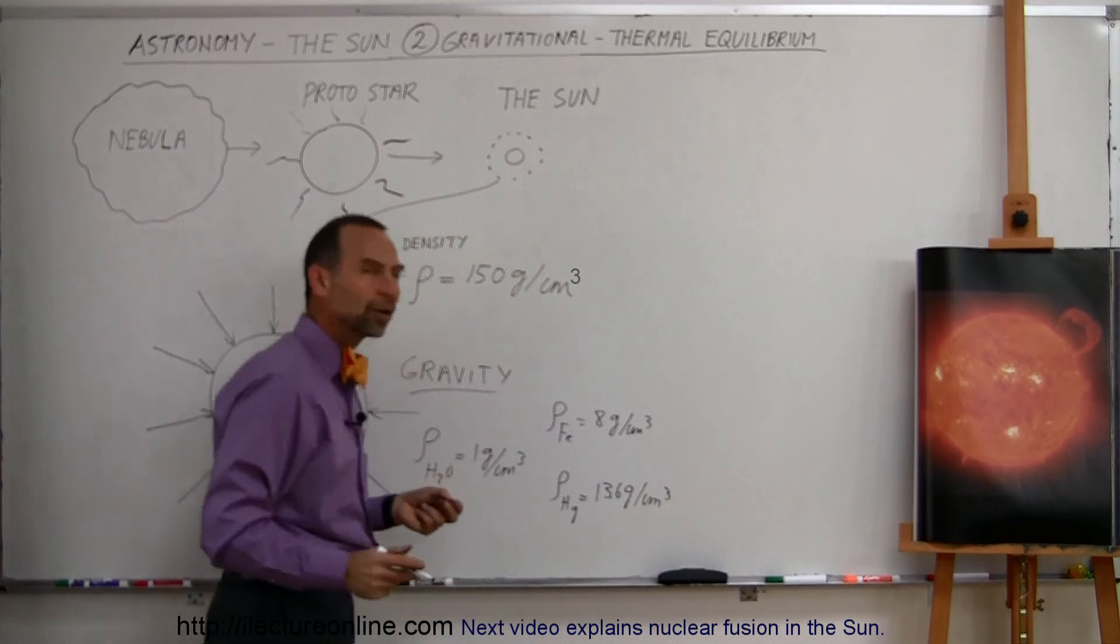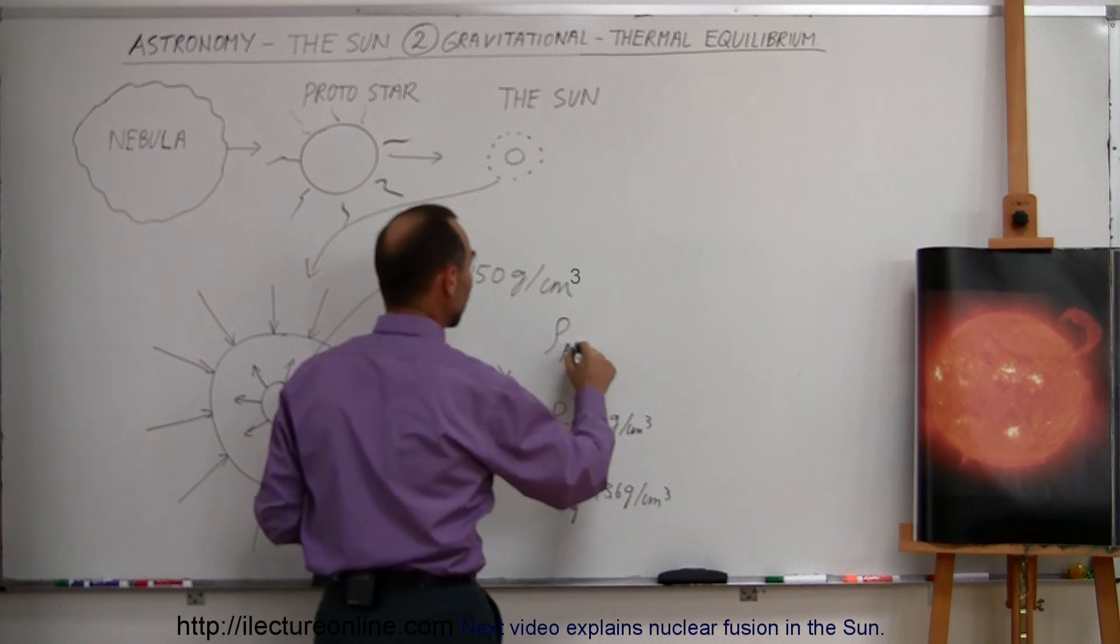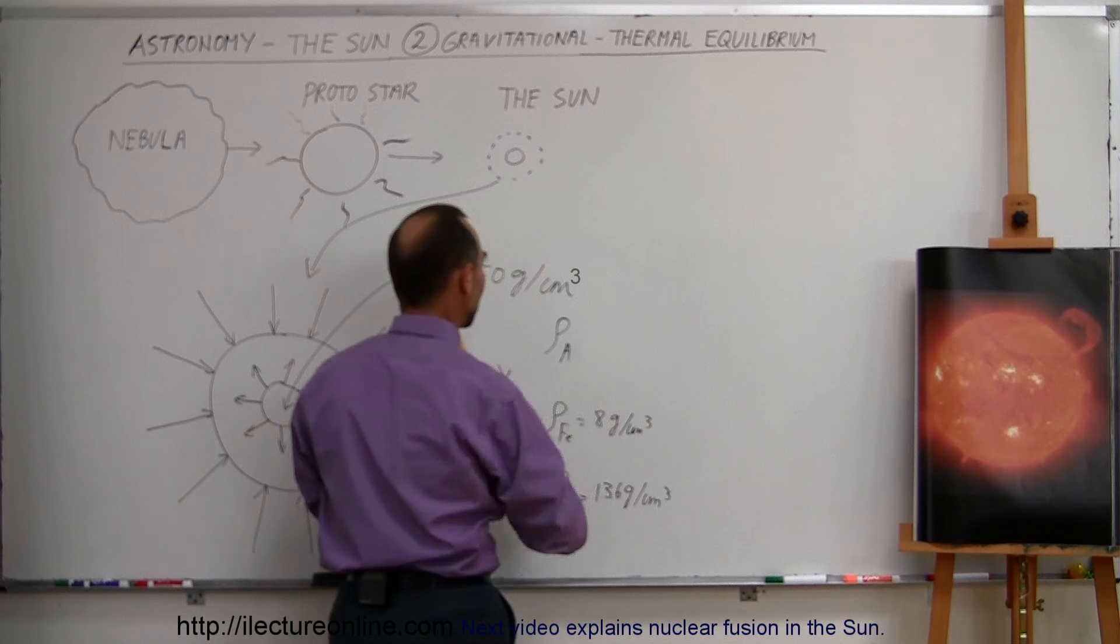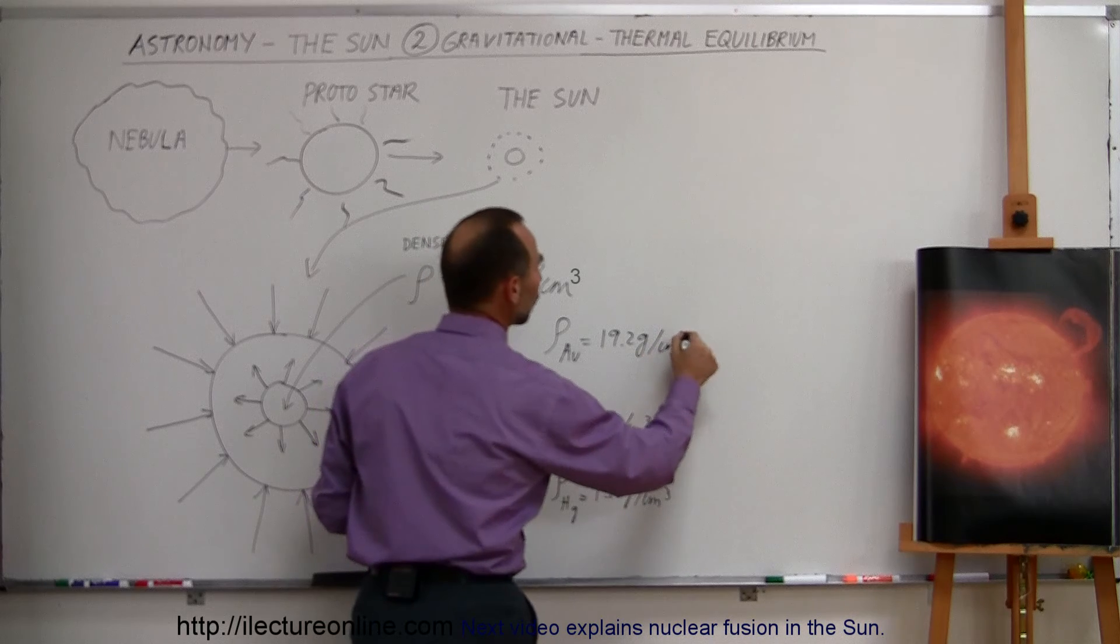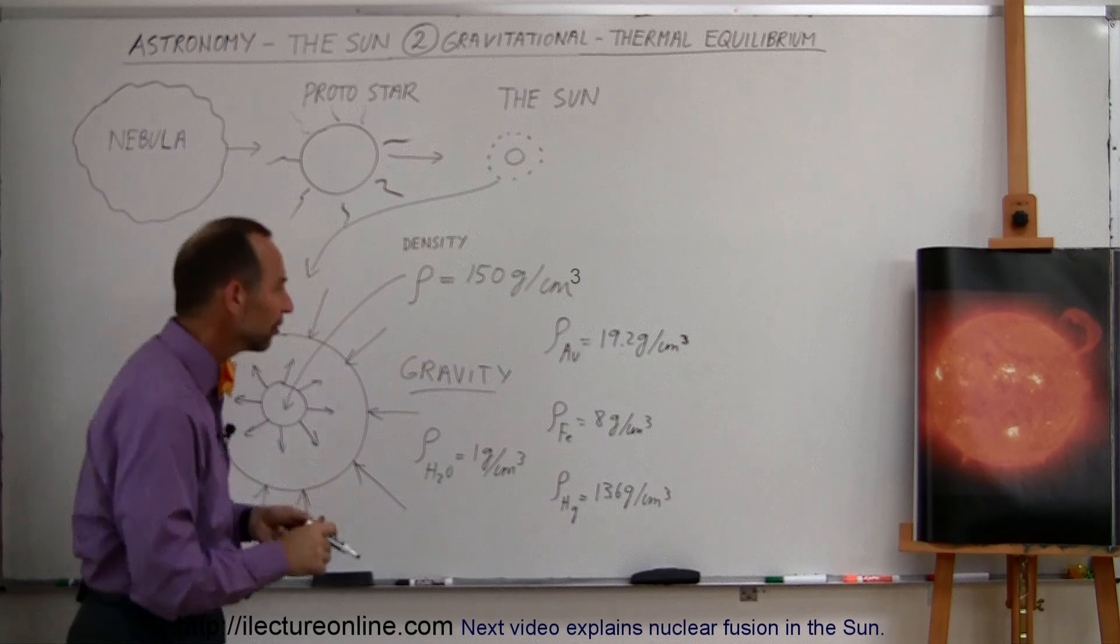And finally, one of the most dense metals on the Earth would be gold. So the density for gold, Au, should be a small u, not a big U if I want to do this correctly, there we go, is about 19.2 grams per cubic centimeter.